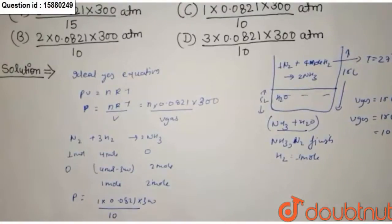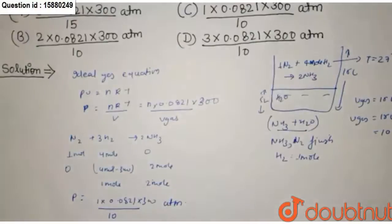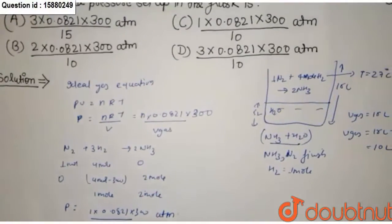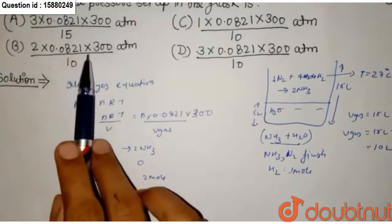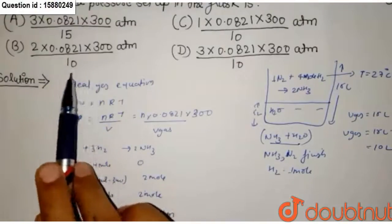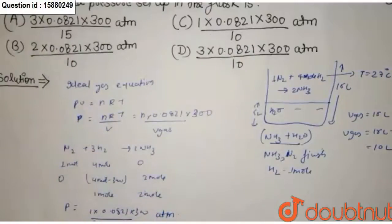This is the pressure exerted by H2. Now we will go to the option. First option is 3 times 0.821 times 300. Second option is 2 times 0.0821 into 300 by 10 by 15. This is 1 mole R and volume 10, so this is correct option.